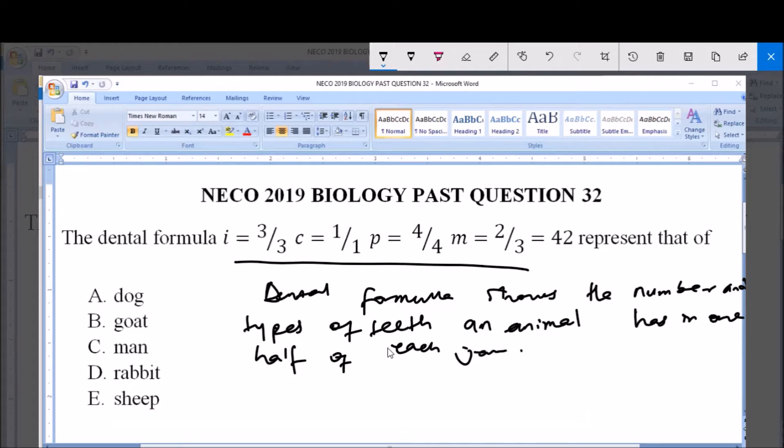That is both upper and lower jaw. The numerator represents the upper jaw and the denominator represents the lower jaw. Now, let's briefly establish the dental formula of these following animals.